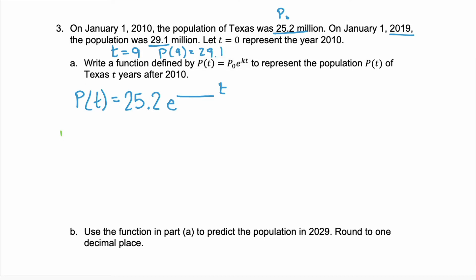We can use this information. p(9) equals 25.2·e to the k times 9, and we know p(9) is 29.1. Notice that if we put in that point — 9 years, 29.1 million — our only variable is k, so we can solve this for k.